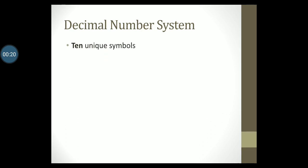In this system, there are 10 unique symbols to represent any valid decimal number. The symbols are 0, 1, 2, 3, 4, 5, 6, 7, 8, and 9. Since counting in decimal involves 10 unique symbols, we say that the base or radix of the number system is 10.